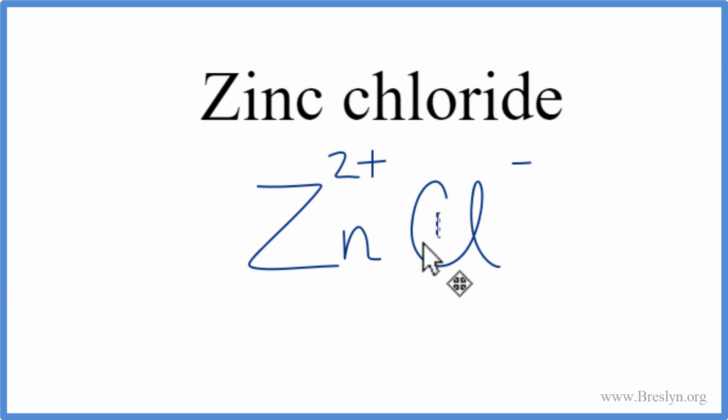So we take the one here and move it down here, and we move this two after the chlorine. By convention, we don't write the one, and we can get rid of the charges as well. So that's the formula for zinc chloride, but we should check our work.